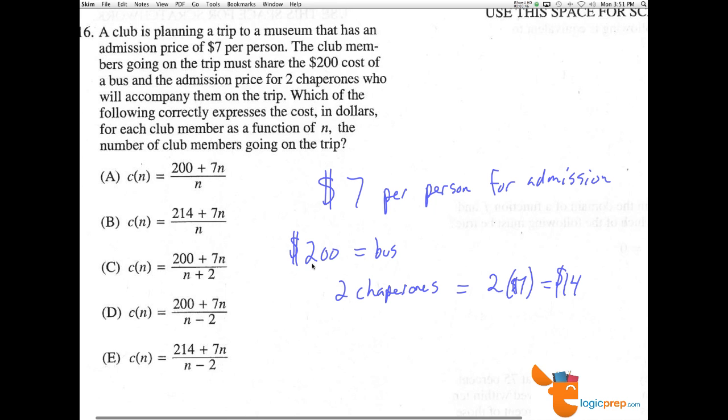So we have the $200 for the bus and the $14. That's $214 that everyone needs to account for.